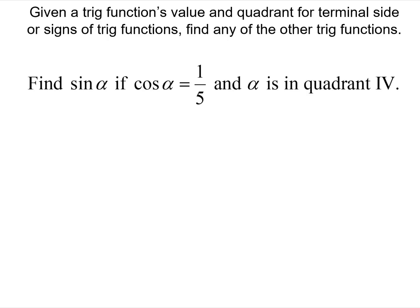So given a trig function's value and a quadrant for the terminal side, we're going to find the other trig functions. So we have sine alpha, we're going to find it if cosine alpha is 1 fifth and alpha is in quadrant 4.